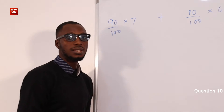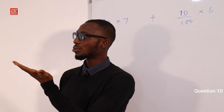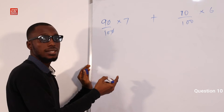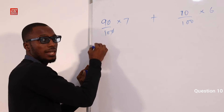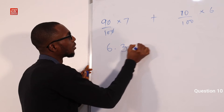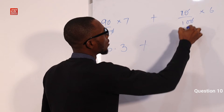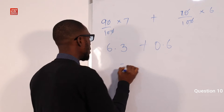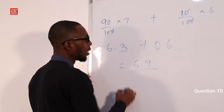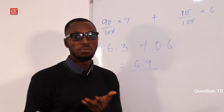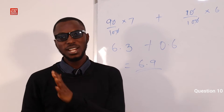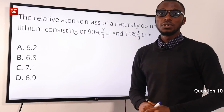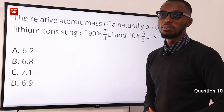So 7 times 9 is 63; 63 divided by 10 gives you 6.3. Then 6 times 1 is 6; 6 divided by 10 is 0.6. Adding them up: 6.3 plus 0.6 gives you 6.9. That is the relative atomic mass of lithium according to this question. So option D, 6.9, is the relative atomic mass.